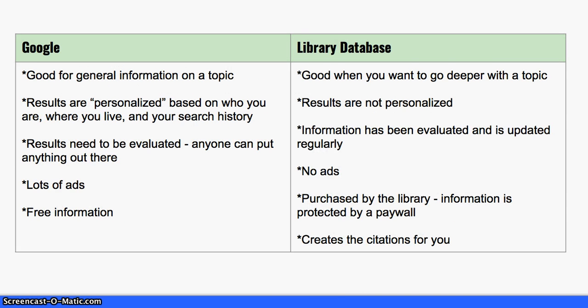Google is a good place to start, but you shouldn't stop there. It shouldn't be the only tool you use for research. It's time to broaden your horizons and try using one or more library databases. Google is meant for the general audience, and so it's really good for getting general information on a topic — sort of a topic overview. A library database is good when you want to go deeper and get more specific with a topic.